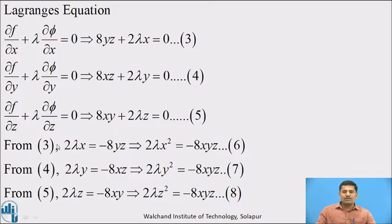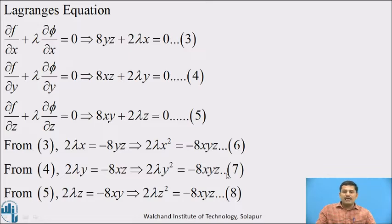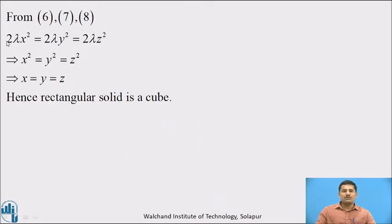From equation number 3, we can write 2λx = −8yz. Similarly, 2λy = −8xz and 2λz = −8xy. Our aim is to eliminate the parameter lambda and obtain the values of x, y, z. Multiplying the first equation by x: 2λx² = −8xyz — equation 6. Multiplying the second by y: 2λy² = −8xyz — equation 7. Multiplying the third by z: 2λz² = −8xyz — equation 8. Since the right-hand sides of equations 6, 7, 8 are equal, we can equate the left-hand sides: 2λx² = 2λy² = 2λz².